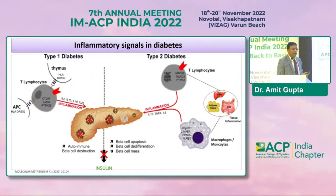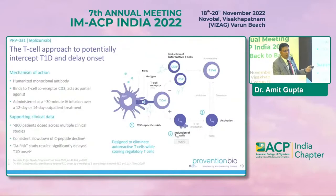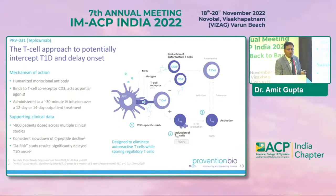It is not just type 2 diabetes where inflammation plays an important role — in type 1 diabetes, T-cells through inflammatory pathways can actually lead to autoimmune beta cell destruction. This is important to understand today because just a few hours before this talk, the FDA approved teplizumab as an anti-immune therapy that can delay the onset of type 1 diabetes by a couple of years. It is a humanized monoclonal antibody that binds to the T-cell coreceptor CD3 as a partial agonist.